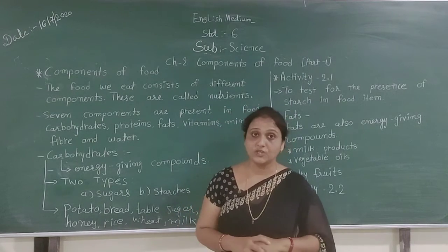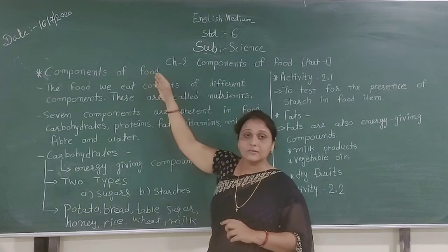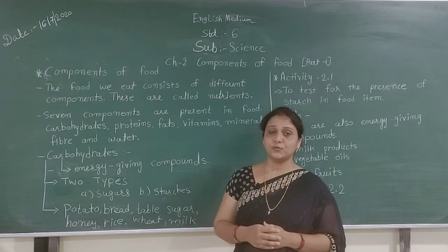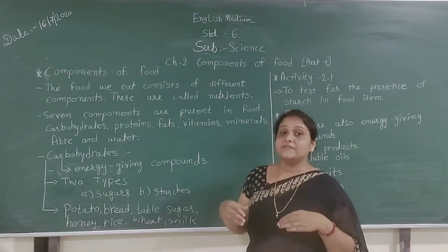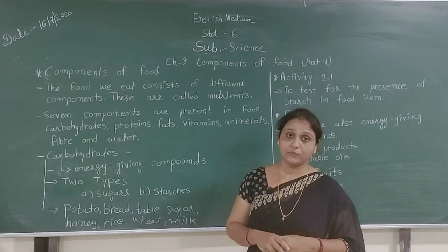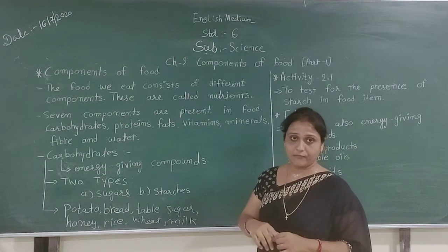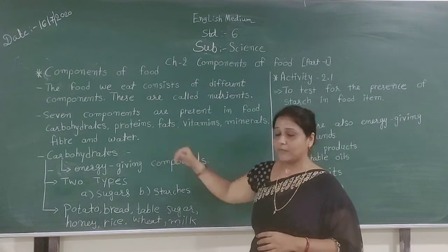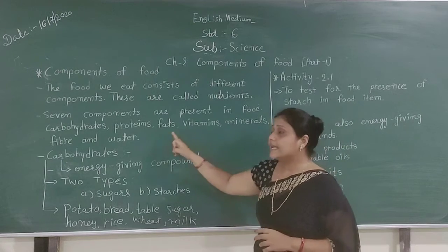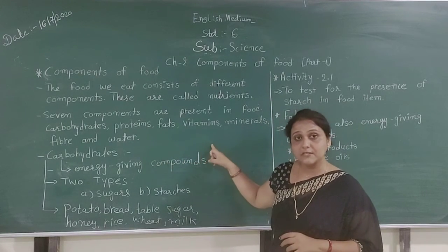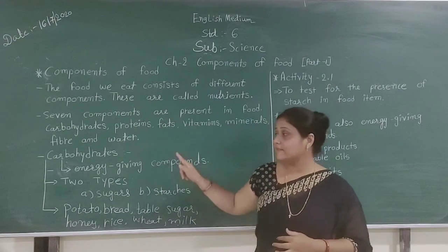In this chapter we have discussed components of food and how food is useful to us. Without food, if we want to live and do activities, we have to eat healthy food. The seven types of components of food are carbohydrates, proteins, vitamins, minerals, fiber, and water — all very useful to our body.